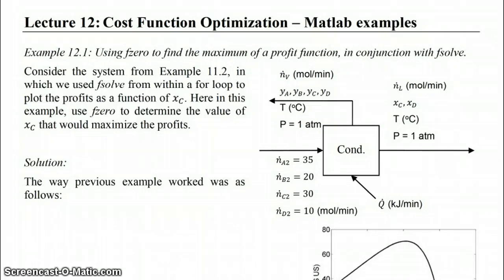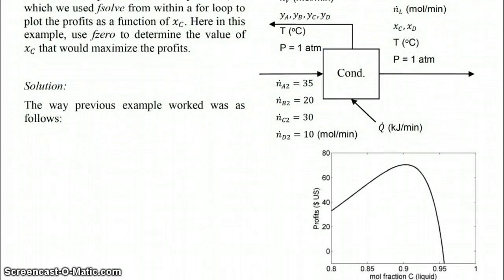This particular screencast and example is jumping off of a previous example, example 11.2, when we used fsolve from within a for loop to find the profit function as a function of xc. We varied xc from purity 0.8 to 0.99, saw how the profit function changed, and plotted it. From that plot we determined where the maximum was — right about at close to 90% purity and 70% profit.